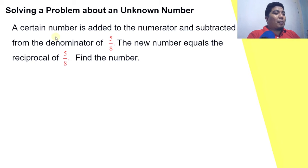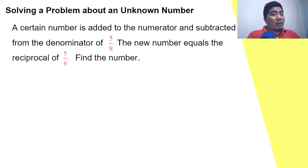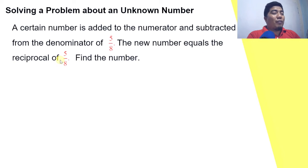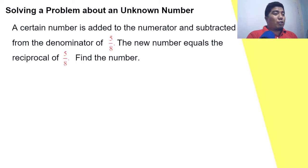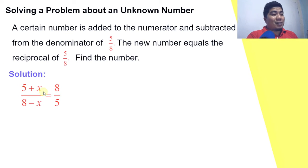The number is also subtracted from the denominator, so in the denominator we will subtract x from the fraction five over eight. The new number equals the reciprocal of five over eight. The reciprocal of five over eight is eight over five.